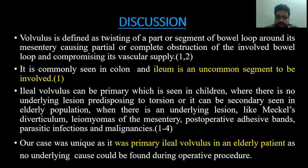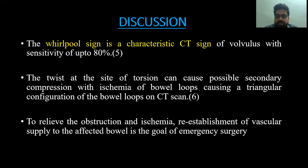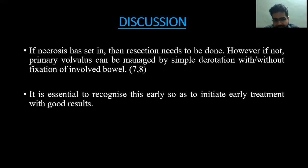Our case was unique because it was primary ileal volvulus in an elderly patient, as no underlying cause could be found during the operative procedure. The whirlpool sign, seen in our images, is a characteristic CT sign of volvulus with a sensitivity of up to 80%. The torsion can cause secondary compression with ischemic bowel loops, producing a triangular configuration on CT scan. The goal of emergency surgery is to relieve obstruction and ischemia by re-establishing vascular supply. If necrosis has set in, resection is needed; otherwise, primary volvulus can be managed by simple derotation with or without plication of the involved bowel. Early recognition is essential to initiate timely treatment with good outcomes.